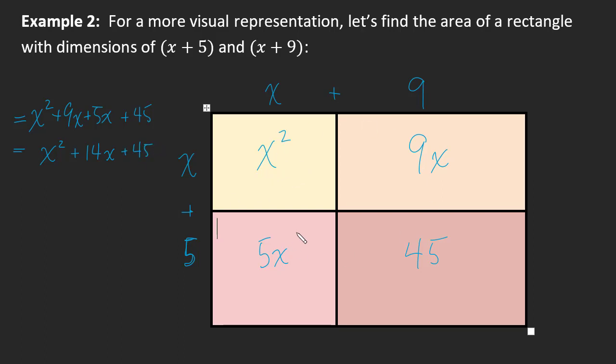So this is just a visual representation of the methodology. You wouldn't draw this out every time, but essentially we did x times x, x times 9. That gave us these two items here and here. And 5 times x, 5 times 9. And that gave us these two items here.